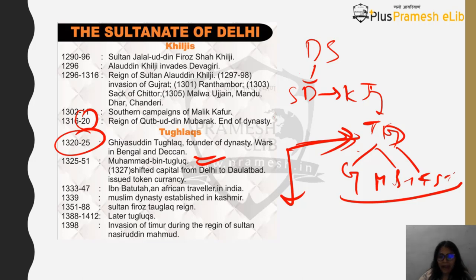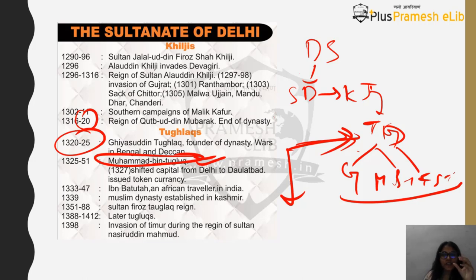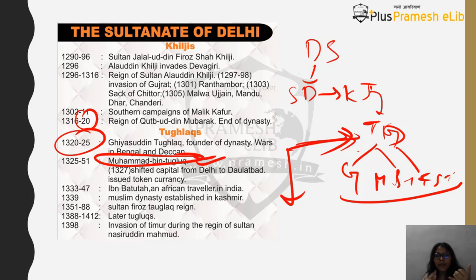After Ghiyasuddin Tughlaq came the reign of Mohammed bin Tughlaq, also called the mad king, because he took many decisions that failed. Many historians have said his reforms were ahead of his time. For example, he started the concept of token currency — issuing lead coins with the same value as silver coins. But it failed because people started forging the coins and fake currency flooded the market.